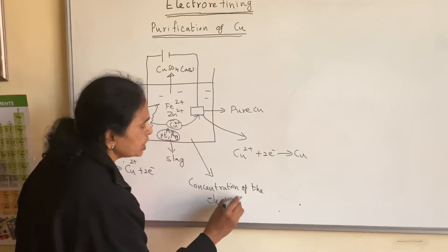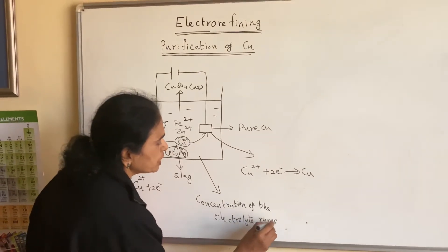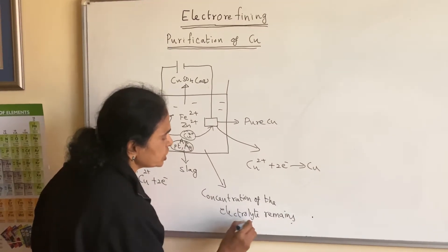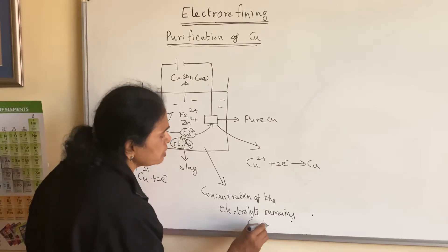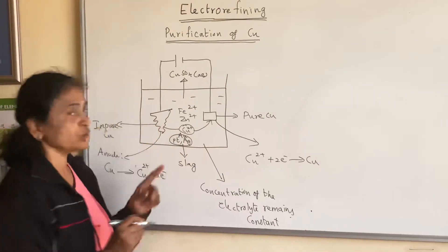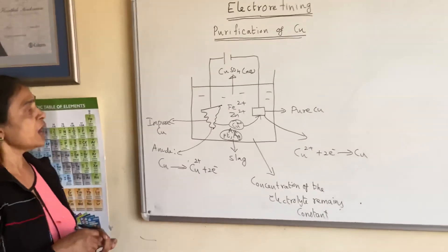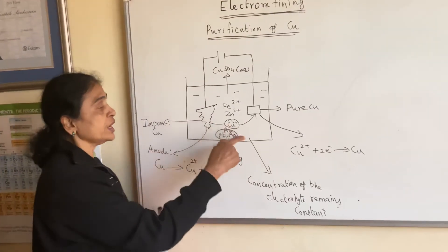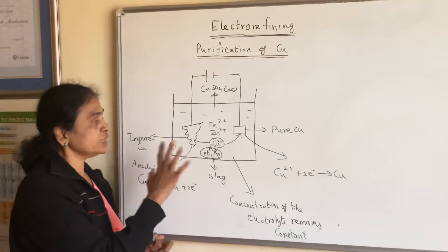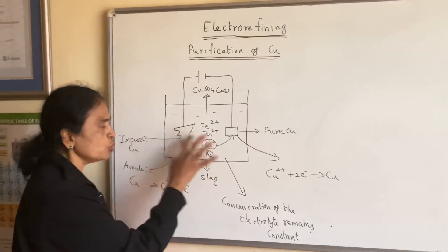Concentration remains constant because the rate of oxidation—when the ions come from anode to the electrolyte—once it has come to the electrolyte, there is no difference between the ions that come from this one and the ions that are present here. So it doesn't matter. As more ions come, more ions will move to that.